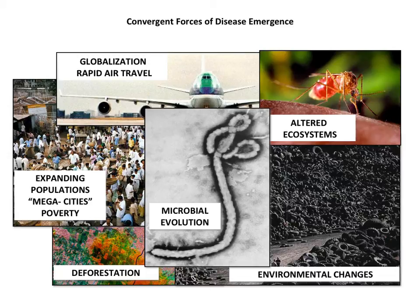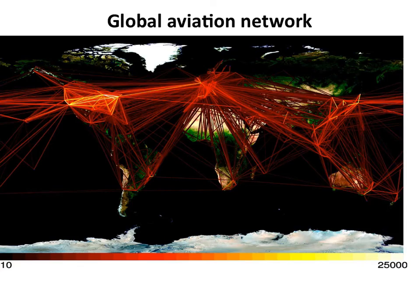Environmental changes also play a role — empty tires carrying mosquitoes around is just one example. We alter ecosystems constantly through deforestation, population growth, poverty leading to poor sanitation, no public health, no immunizations. And finally, rapid air travel really helps viruses move around — it probably helped West Nile virus come from Israel to New York City in 1999. When you track the spread of new viruses, they often follow air routes.